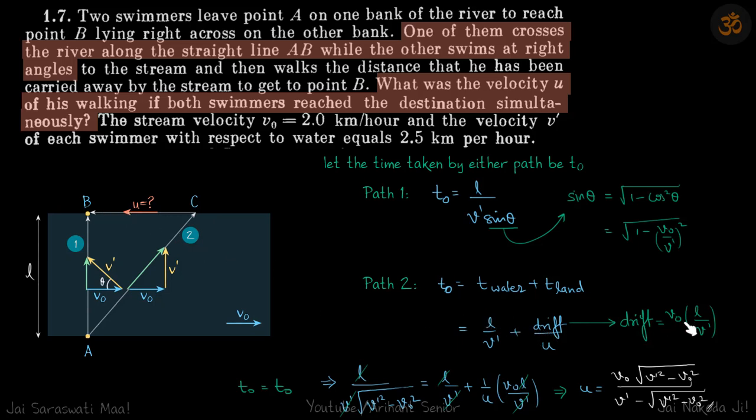And drift is the horizontal velocity times time taken to travel from A to C. So drift is V0 horizontal velocity into time taken which is L by V dash same as this. So we'll equate the time in both the cases and we'll get our answer.